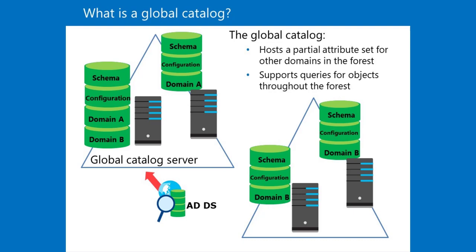Within a domain, a query for an object is directed to one of the domain controllers in that domain, but that query does not include results about objects in other domains in the forest. For a query to include results from other domains in the forest, you must query a domain controller that is a global catalog server. By default, the first domain controller in the forest root domain is the only hosted global catalog server.